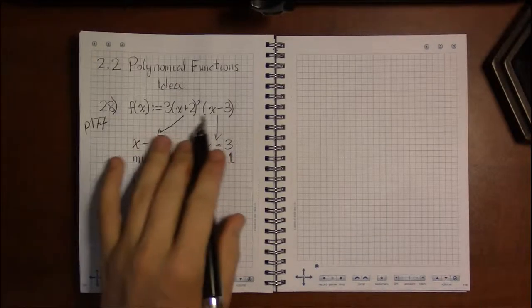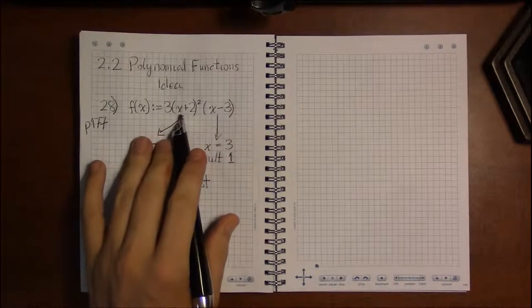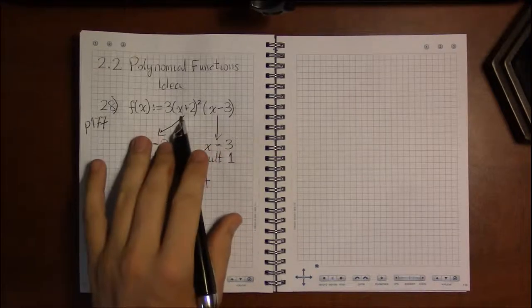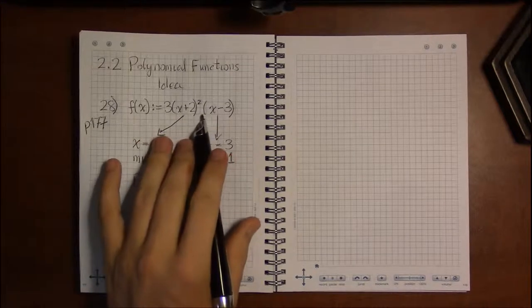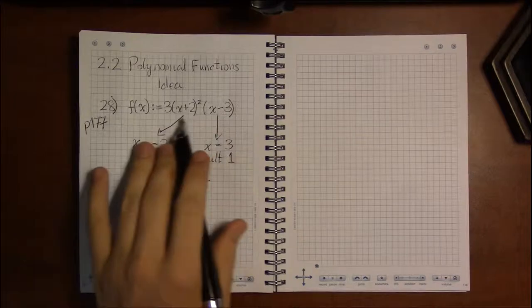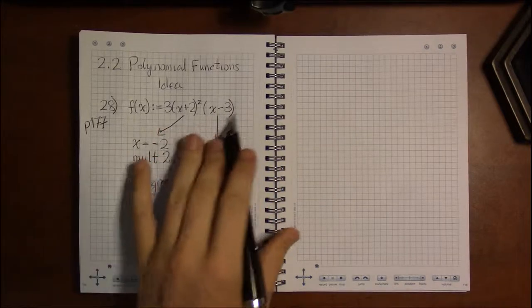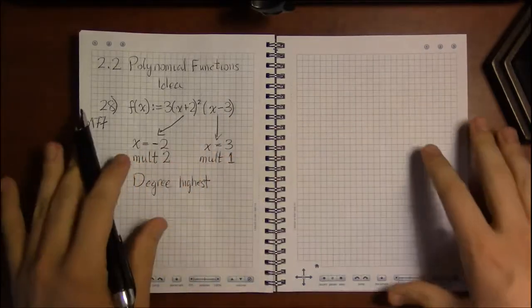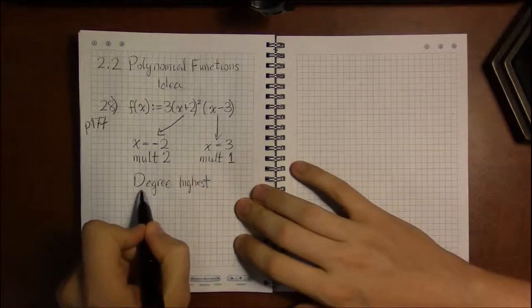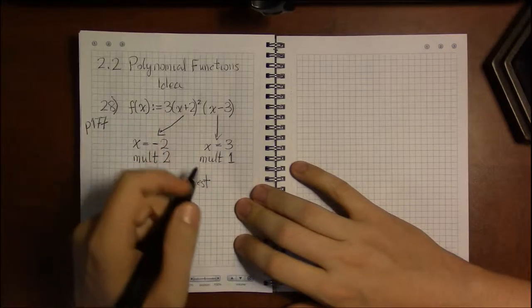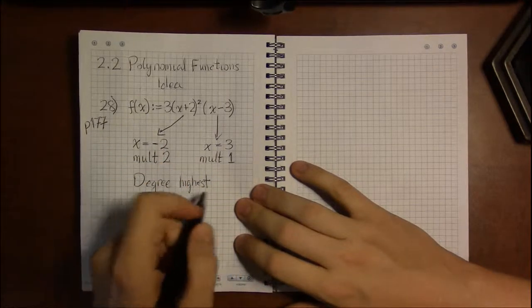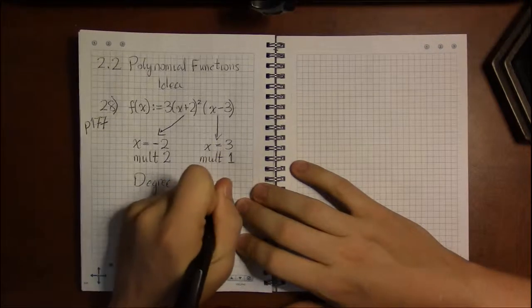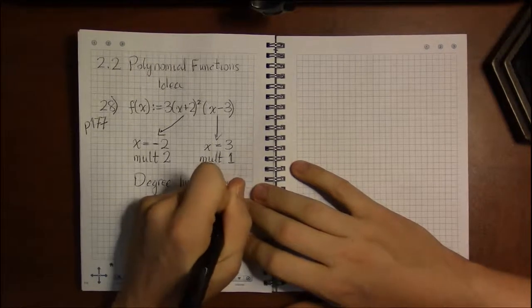In this case, this isn't in that special form. We would have to distribute x plus 2 times x plus 2 times x minus 3. We'd have to do a lot of foiling or distributing to multiply this all out and get the polynomial in the right form so we could see what the highest power of x actually is.